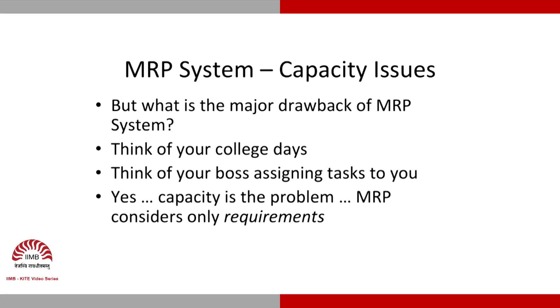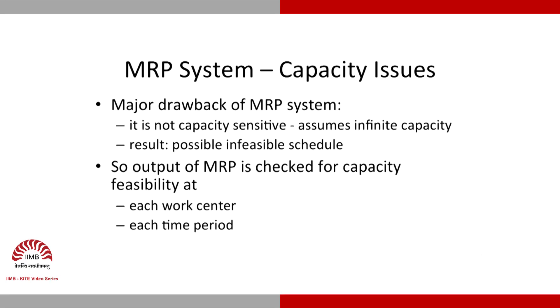In this session we are looking at Capacity Requirements Planning. The major drawback of an MRP system is that it considers only requirements but does not look at whether they are feasible or not. Think of college days — faculty gave assignments with due dates, and a boss keeps assigning tasks with deadlines, but neither checks whether you have enough time to do them. Capacity is the same problem with MRP.